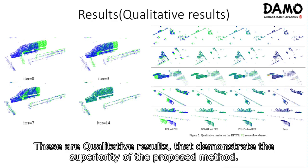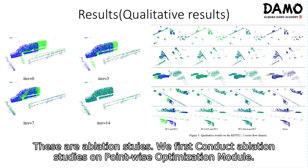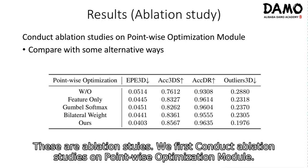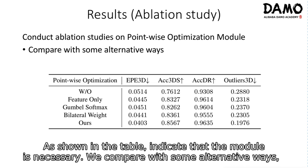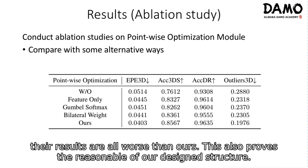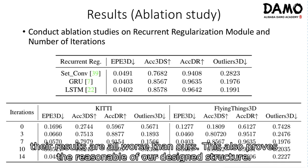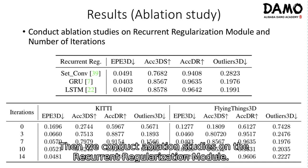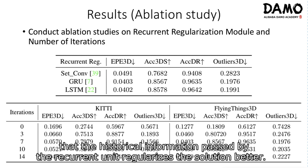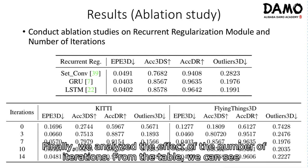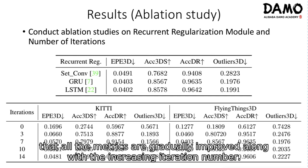These are qualitative results that demonstrate the superiority of the proposed method. For ablation studies, we first conduct ablation studies on the point-wise optimization module. The first question is whether we can remove the point-wise optimization — results indicate that the module is necessary. We compare with alternative approaches, and their results are all worse than ours, proving the reasonableness of our design. We then conduct ablation studies on the recurrent regularization module, replacing the GRU block with three set-conv layers. The worse results indicate that the historical information passed by the recurrent unit regularizes the solution better. Finally, we analyze the effect of the number of iterations, and all metrics improve gradually with increasing iteration number.